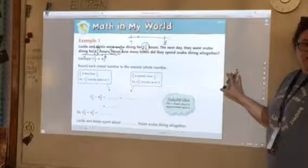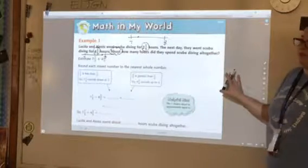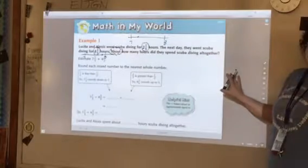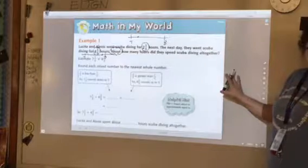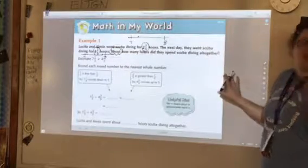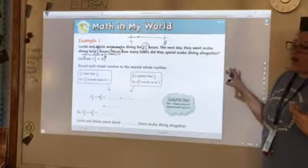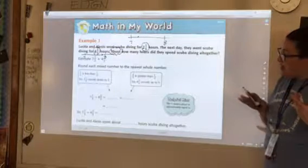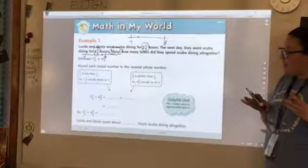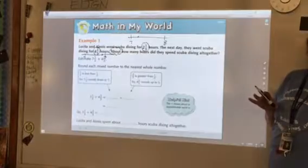So you can do either way. You can add the whole numbers first and then add the fractions or you can add the fractions and then the whole numbers. But because we're estimating, we are going to kind of, we're going to make them whole numbers. Okay?